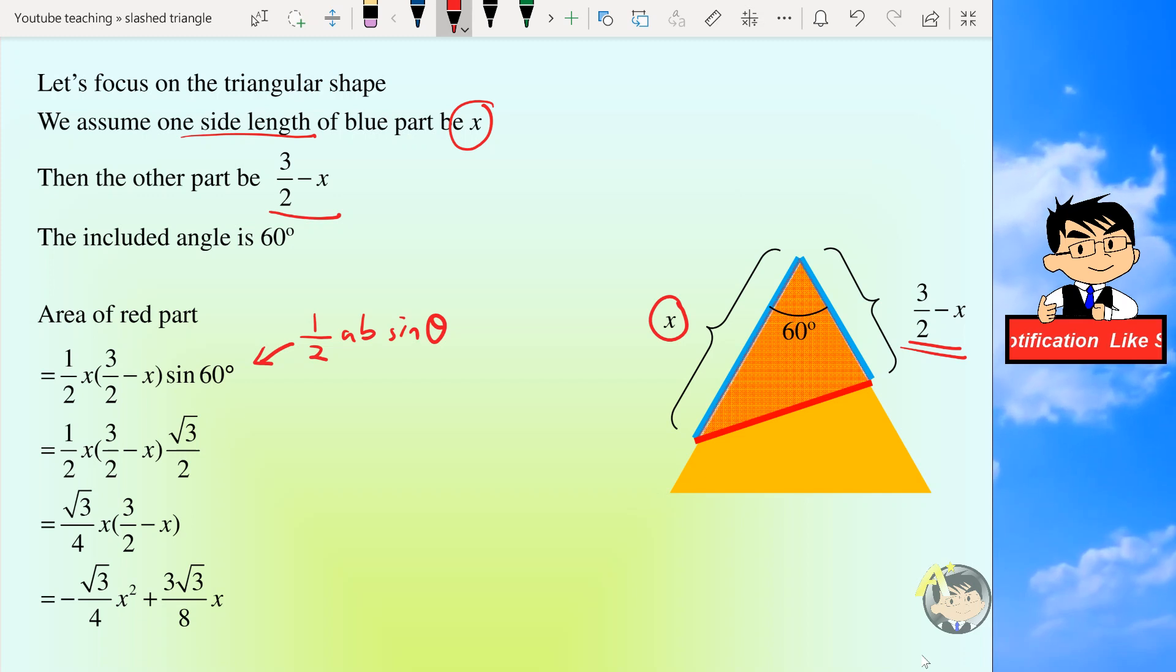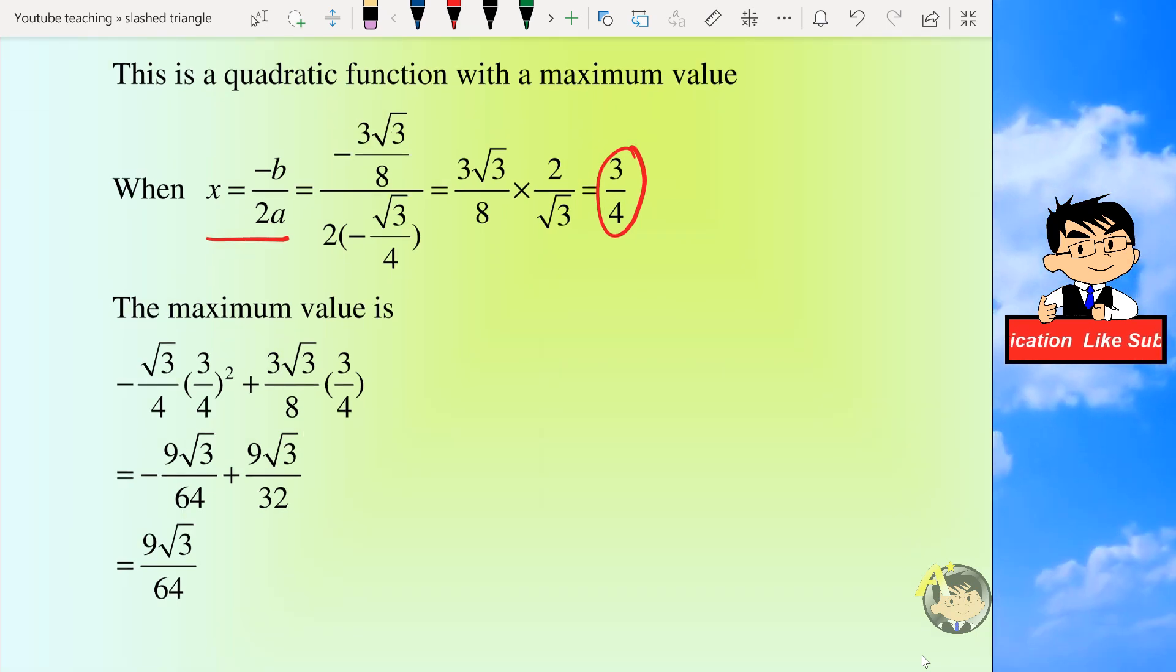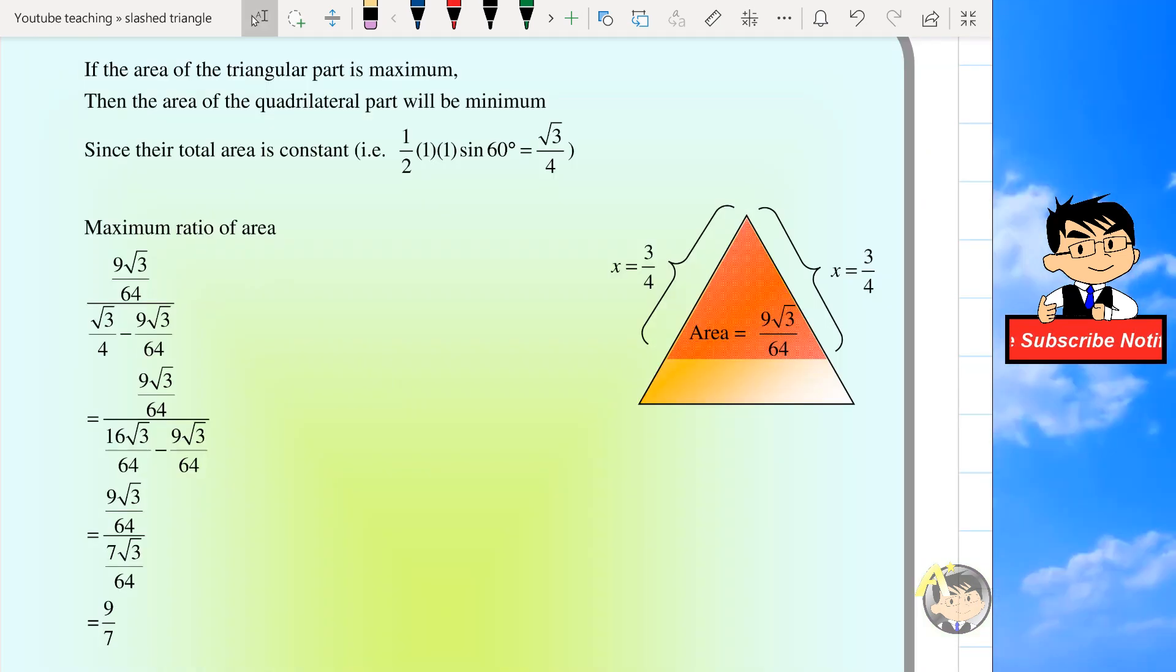We put in all the unknowns and the angle, and after some algebra we can get a quadratic expression. So this quadratic function will have a maximum value, so we can use the formula for the vertex, x equals negative B over 2A, to find the x coordinate of the vertex first, which is 3 over 4. And then we plug this value into the function, so we can get the maximum value for the red triangle to be 9 root 3 over 64.